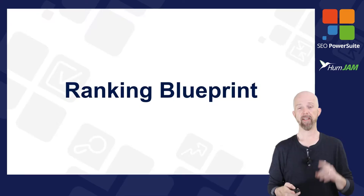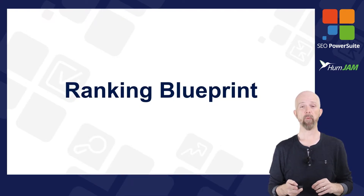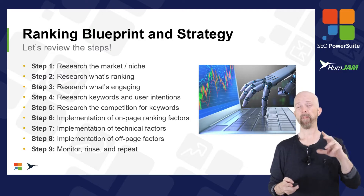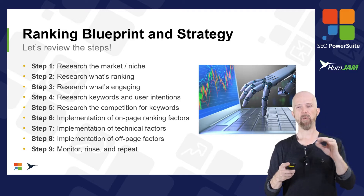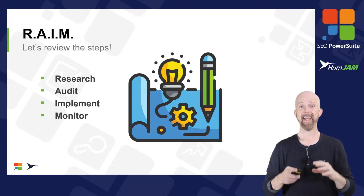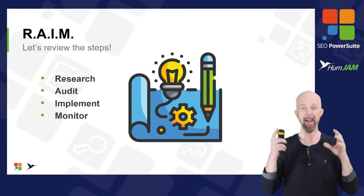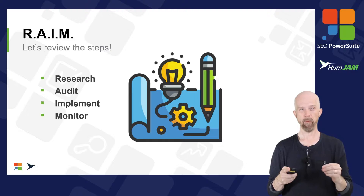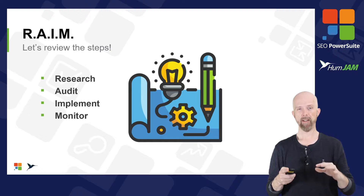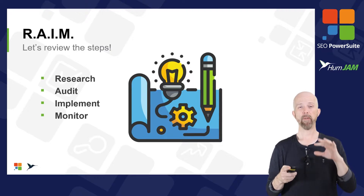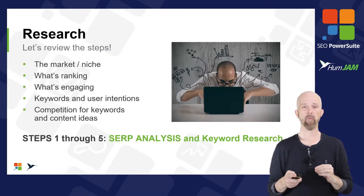Welcome back to the SEO core fundamentals where you're learning the skills to master search engine optimization. In this video I'm going to cover a ranking blueprint. Remember these first nine steps in the very first video? Now we've gone through every single one of these steps in the previous lessons. An easy way to remember it is called RAIM, which stands for Research, Audit, Implement, and Monitor. If you just remember those four things, then you can rank really well.